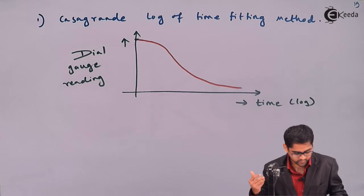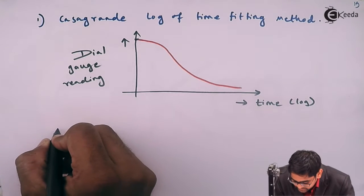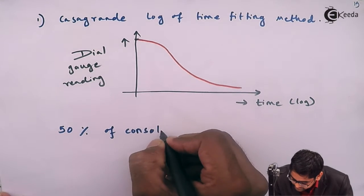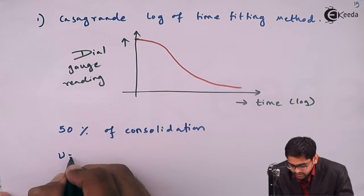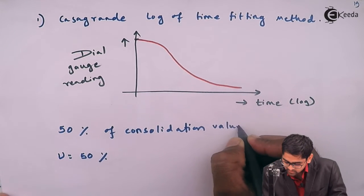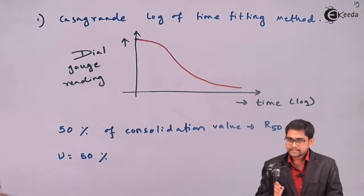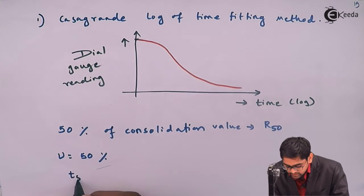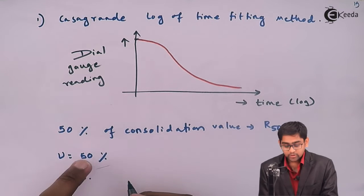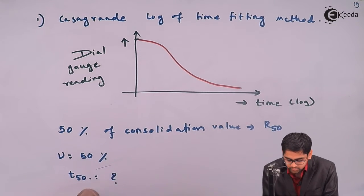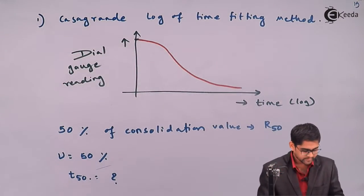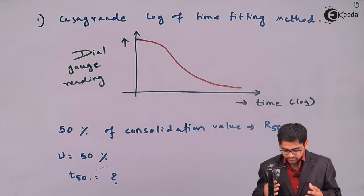Casagrande has emphasized 50% of the consolidation. So 50% consolidation means the degree of consolidation is 50%, and he has considered this value as r50. We are interested in calculating t50 — the time required in the lab to reach 50% consolidation. This curve is already known from the consolidation test, and the procedure is as follows to calculate the 50% value.